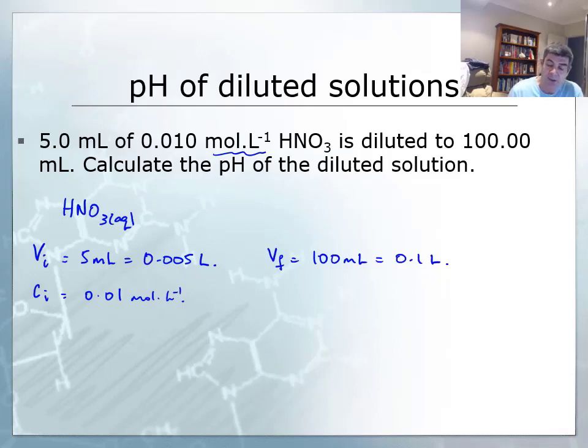In order to calculate the pH of the dilute solution, we need to use the formula: pH = -log₁₀[H⁺]. So I need the concentration of hydrogen ions to do this question.